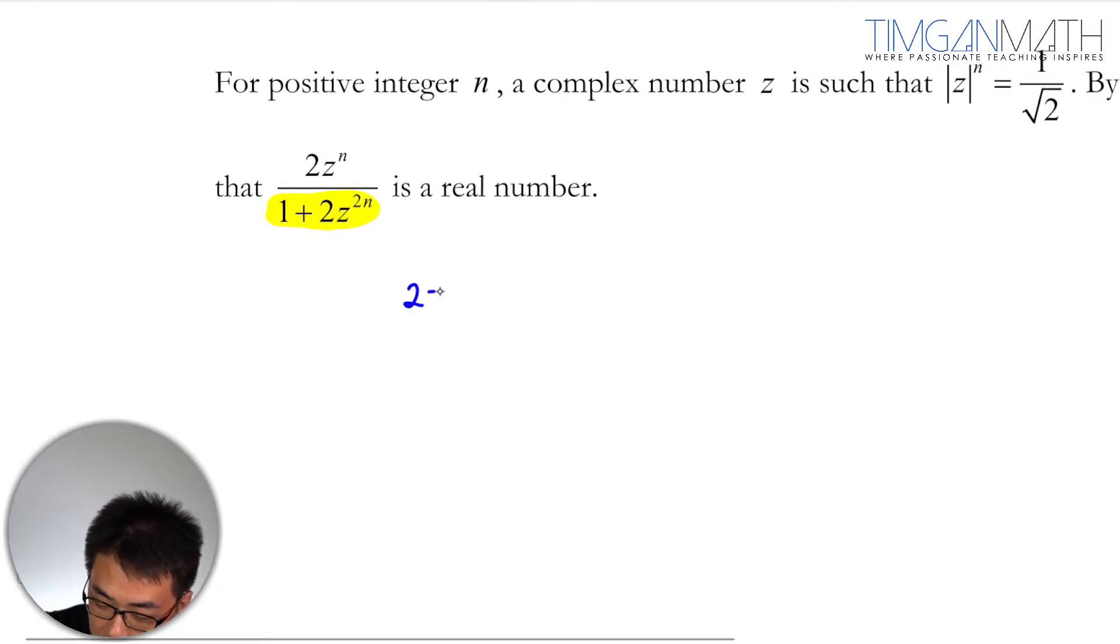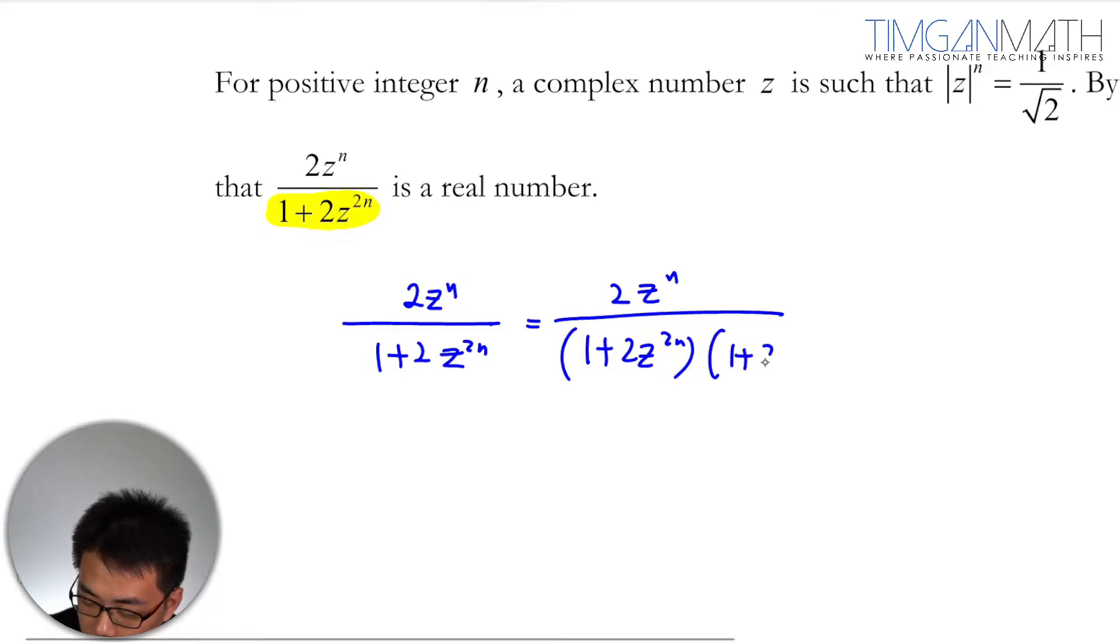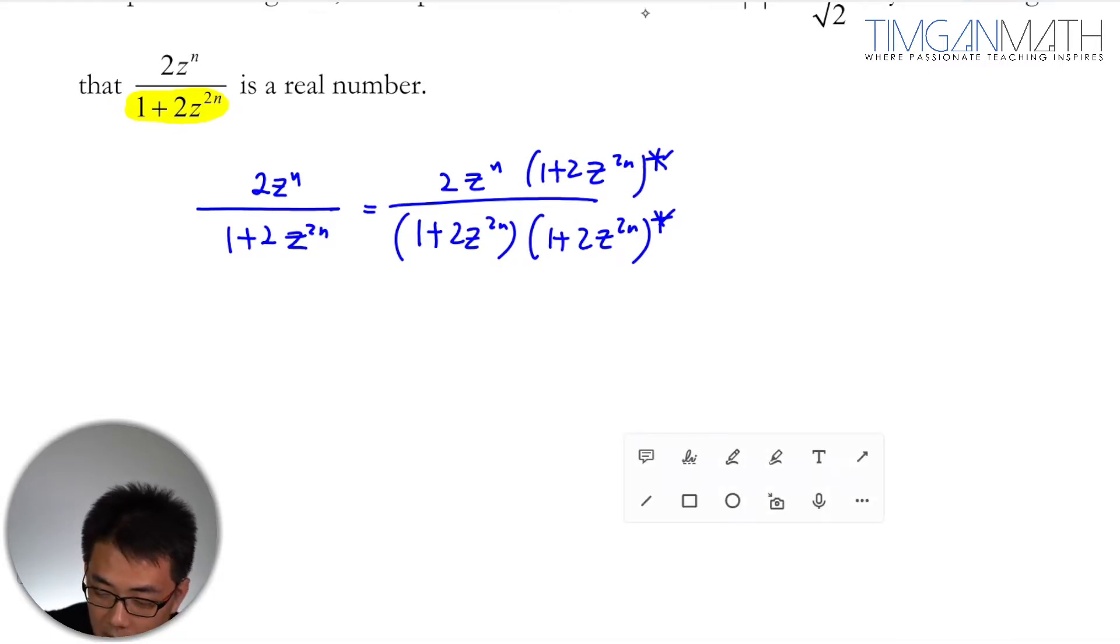So this 2z^n over (1 plus 2z^(2n)). What I'm going to do is take 2z^n over (1 plus 2z^(2n)) and multiply with (1 plus 2z^(2n)) conjugate over (1 plus 2z^(2n)) conjugate as well. So once done, you know that this would definitely be a real value, because these are conjugate, multiplication of conjugate pairs.